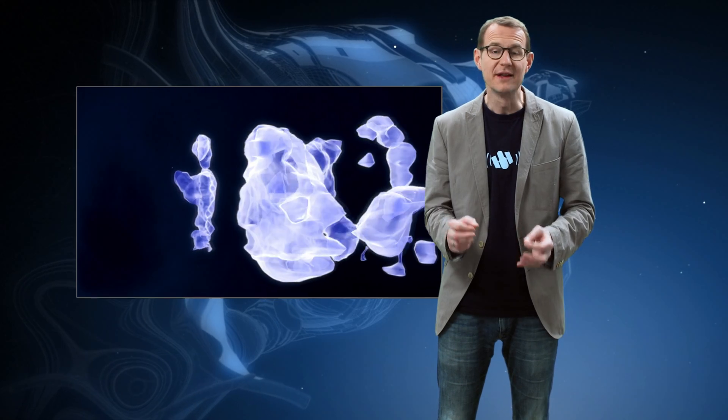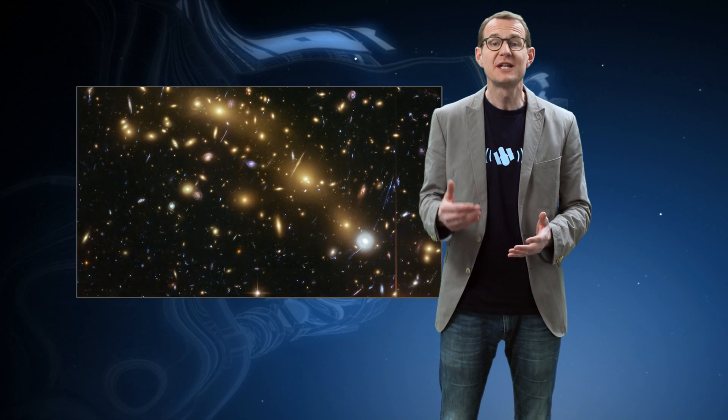If a galaxy cluster contained only the matter that we can see directly, it would never have the gravitational power to distort the light as we observe it. So there must be additional dark matter present, and gravitational lensing tells us how this dark matter is distributed within the cluster.